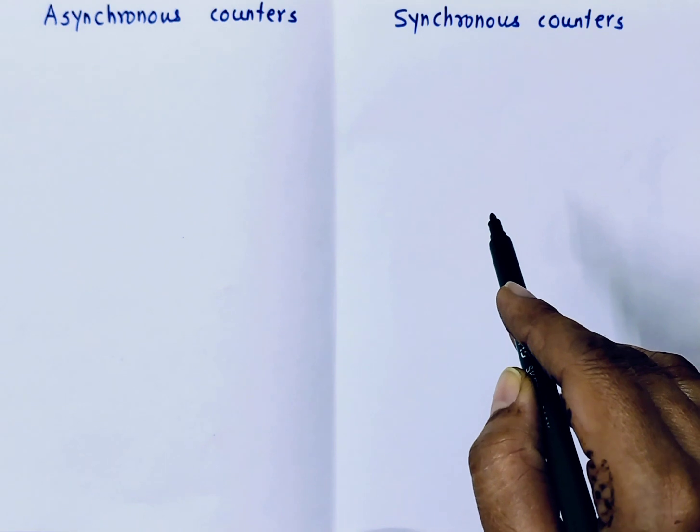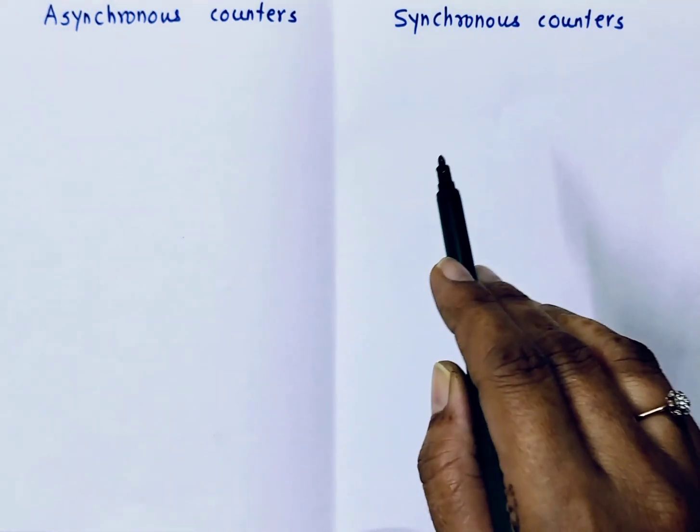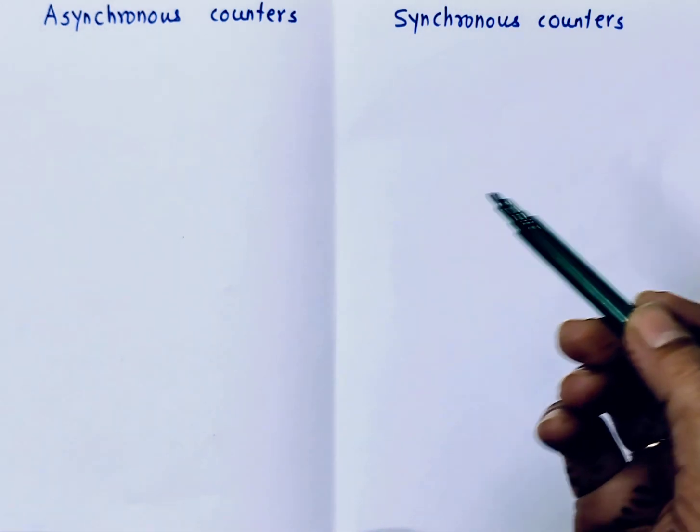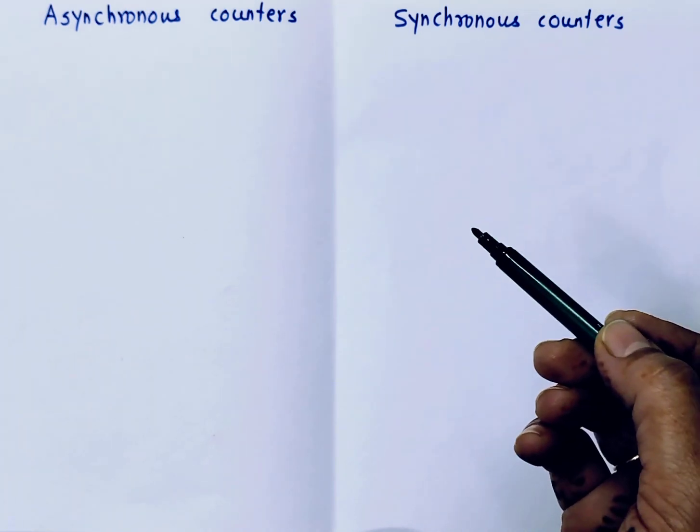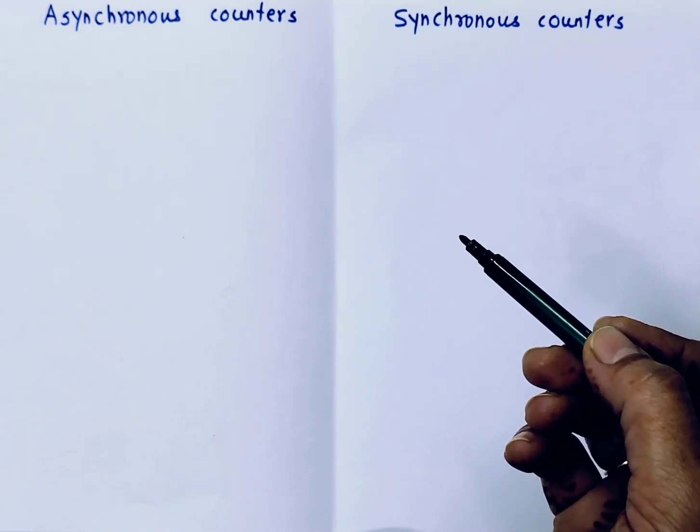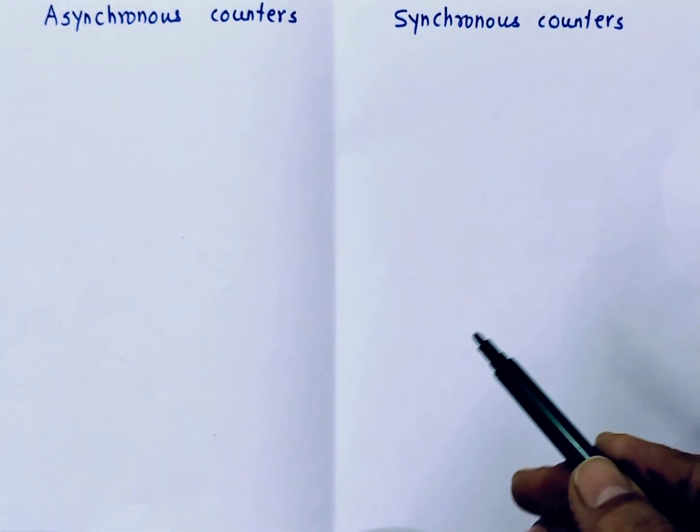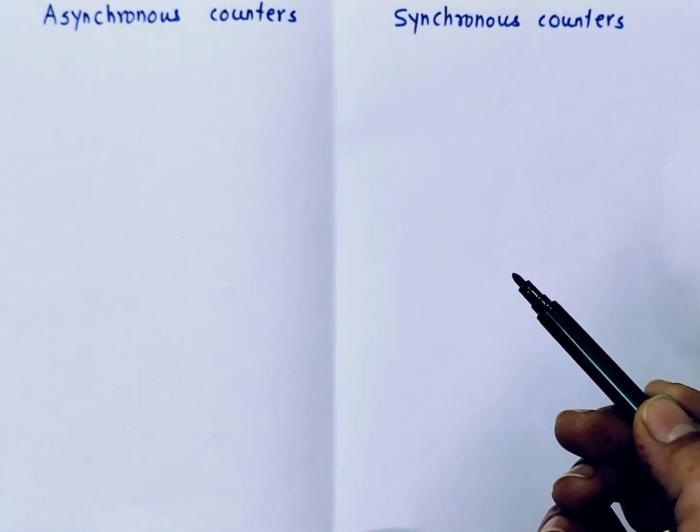First things first, what's a counter? A counter is a digital circuit used to count pulses. These pulses can represent clock signals, events or any kind of input data. Counters come in two main types: Asynchronous Counters and Synchronous Counters. So let's explore how they work.